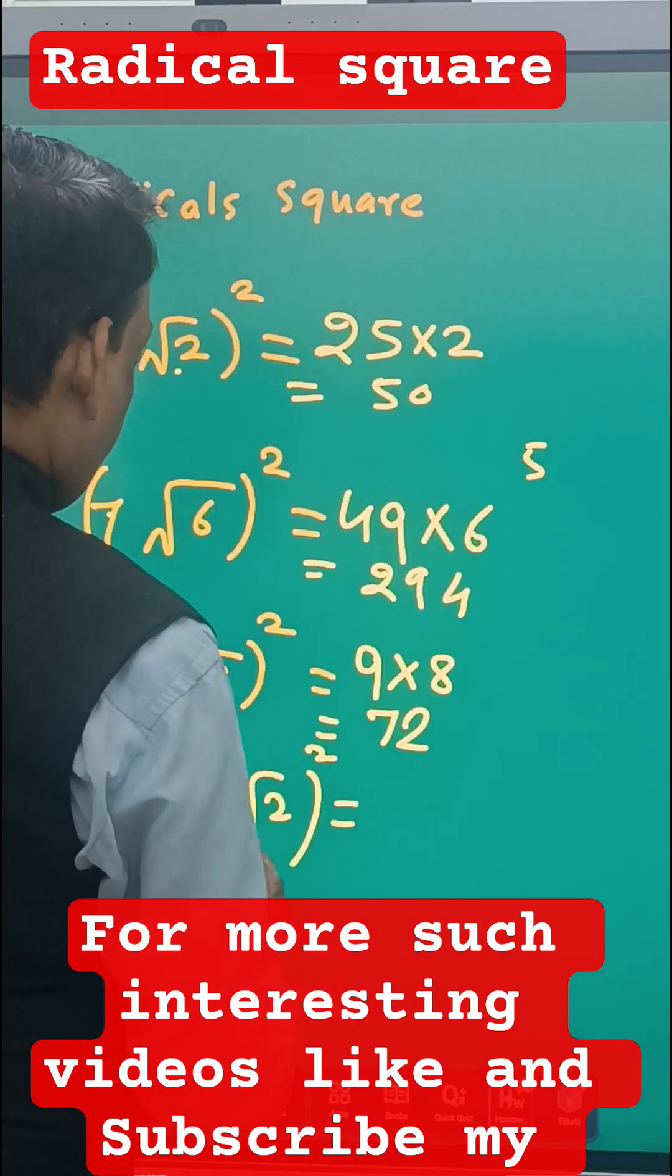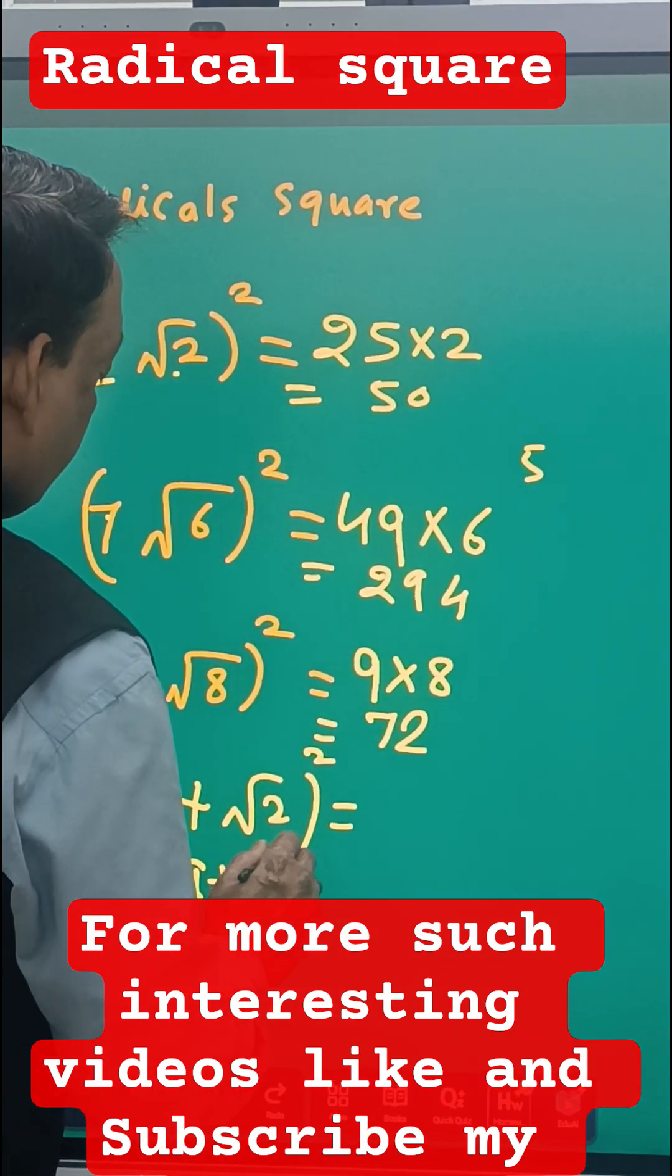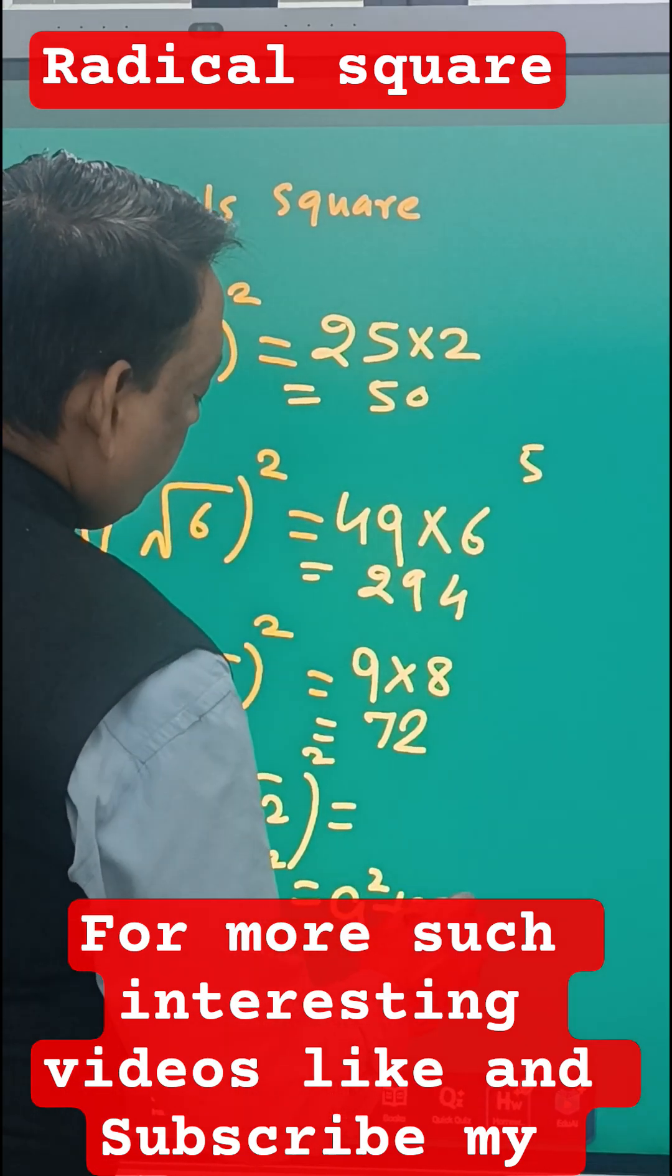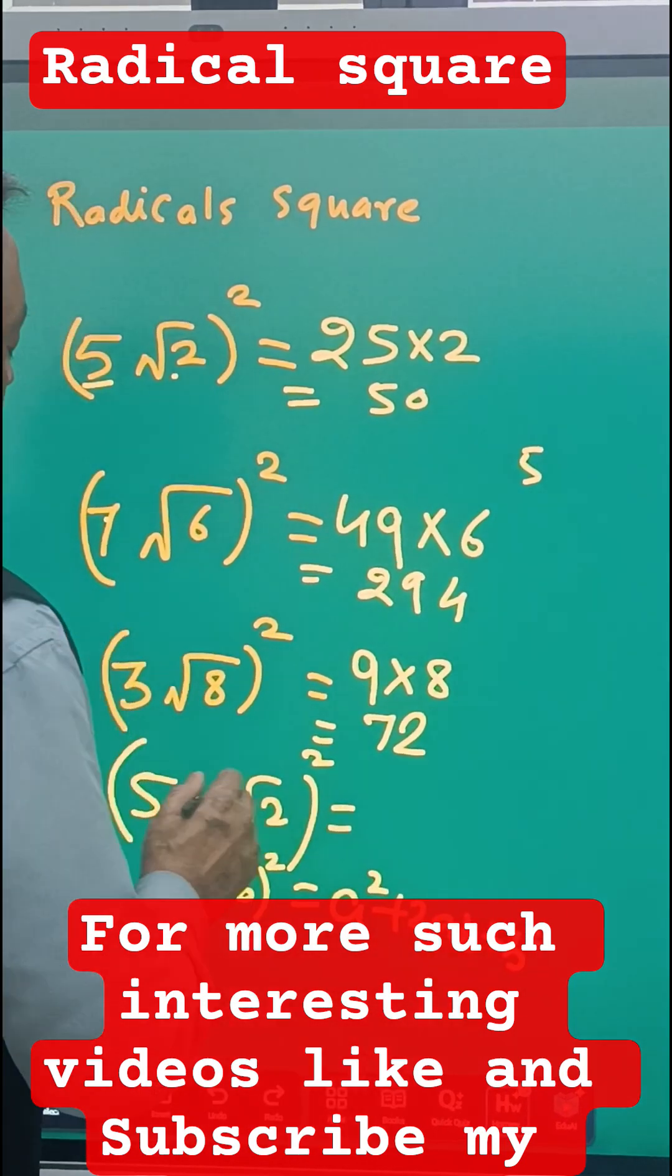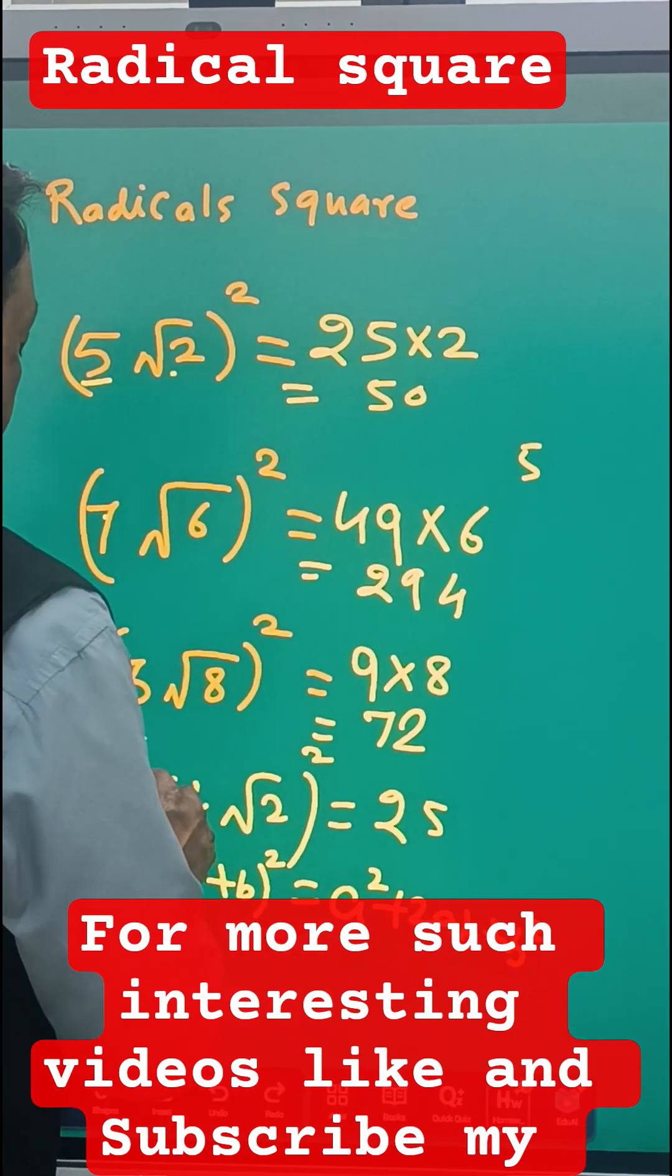Okay, a plus b the whole square, which is nothing but a square plus 2ab plus b square. So we have to use this rule here. So 5 ka square 25, and then 5 into 2 into root 2, so 10 root 2.